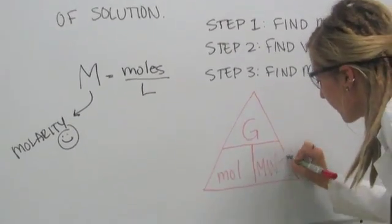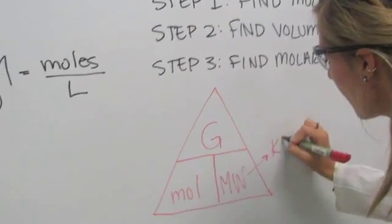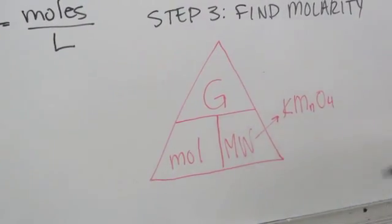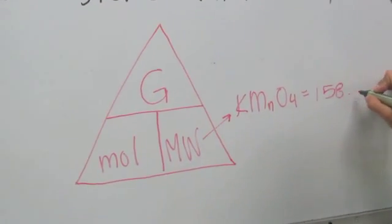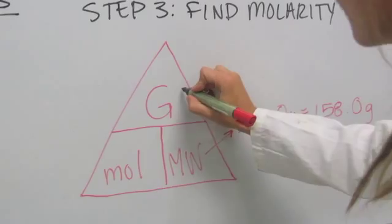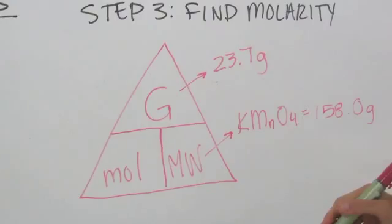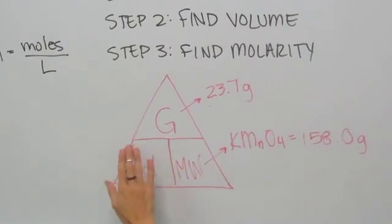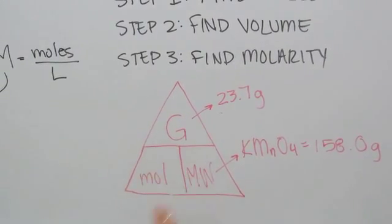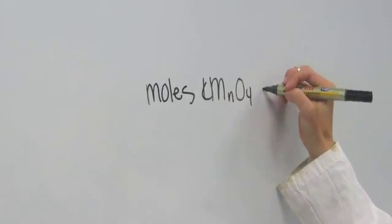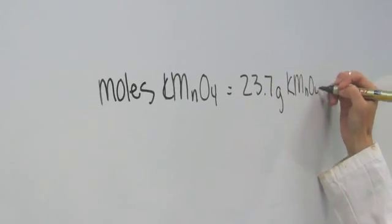So we are given KMnO4 as our solute. Looking at our periodic table, we can deduce that our molecular weight is 158.0 grams. We are given our grams, 23.7. So looking at our triangle, what are we trying to find? Moles. Covering up the moles, we see grams divided by molecular weight will give us our moles. So let's write this out. In finding moles, we have 23.7 grams of KMnO4.